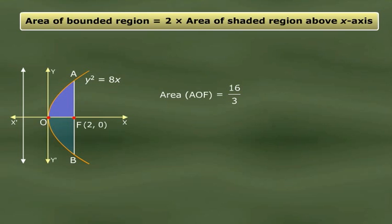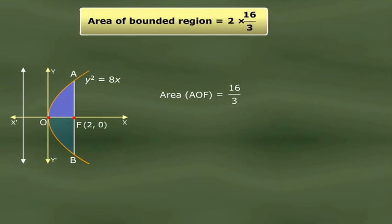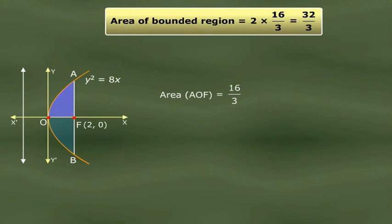So this means that the complete shaded area - what is that? That is twice of 16/3, which is 32/3. So the area of this shaded region is 32/3 square units.